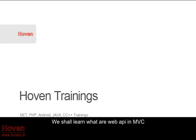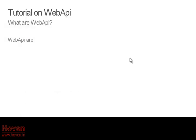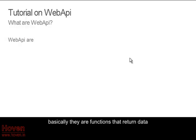We shall learn what are Web APIs in MVC. Basically they are functions that return data.